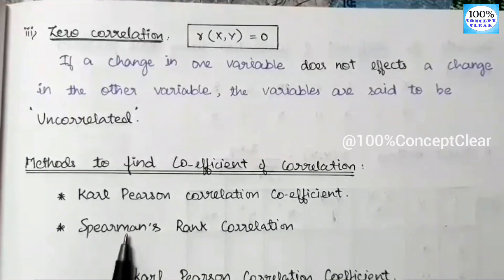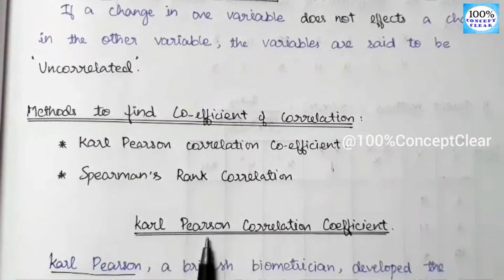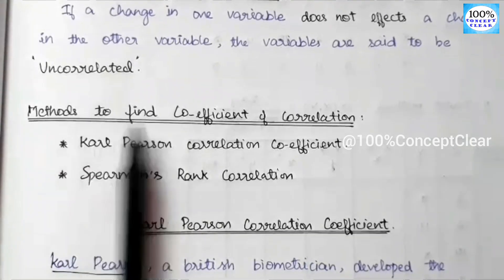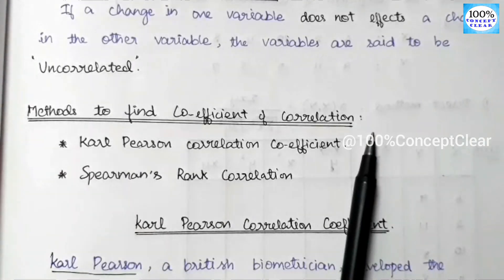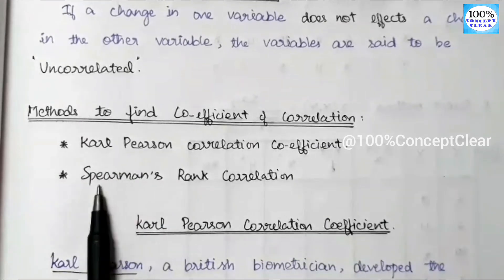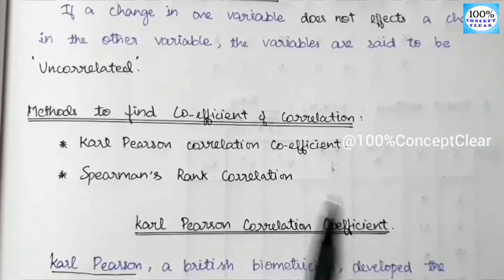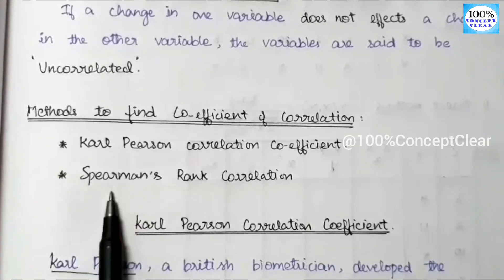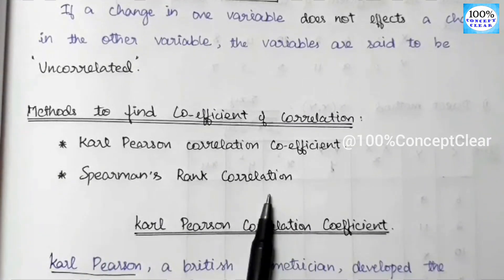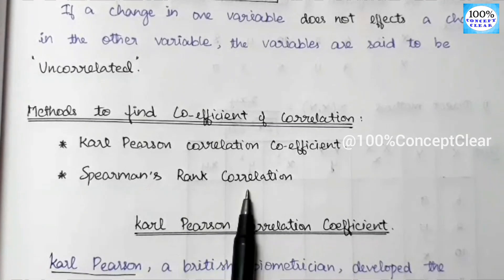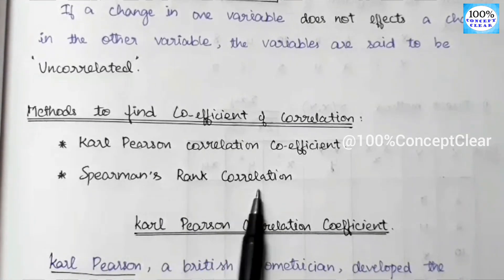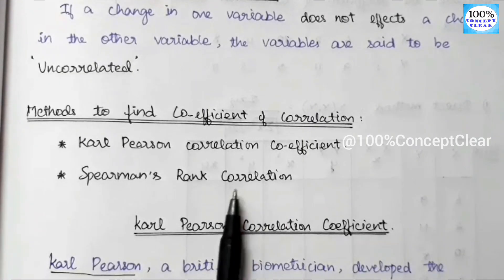In this video, we will look at the correlation coefficient. There are two methods: the Pearson's Correlation Coefficient and Spearman's Ranked Correlation Coefficient. We have already made videos on both methods on our channel. If you want to look at those methods, check the link in the description below.